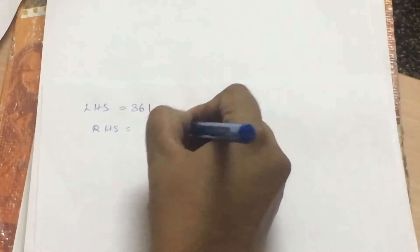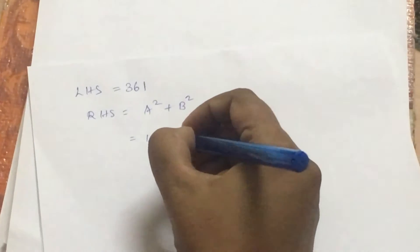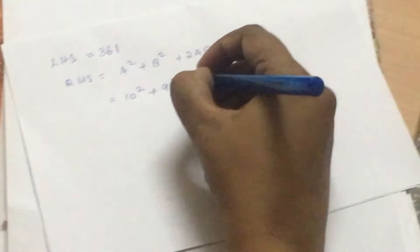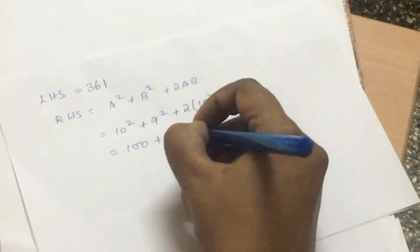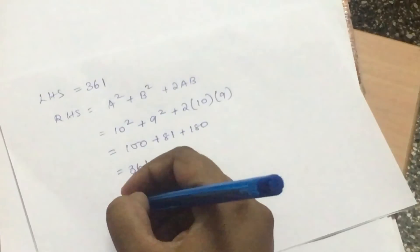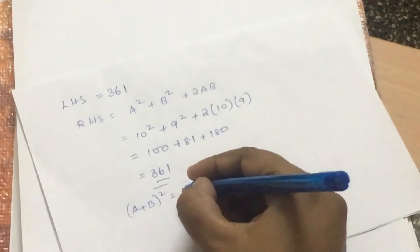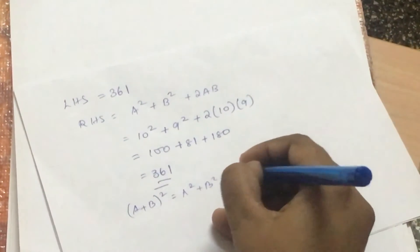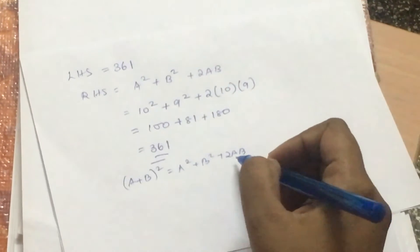Now, what about my RHS? My RHS goes as a² + b² + 2ab. Now, in place of a, I am going to substitute 10, so that makes it 10². In place of b, I am going to substitute 9, and that is 9² + 2×10×9. And that eventually ends up being equal to 361 again. There we have it. This is an identity where (a+b)² which is your LHS ends up being a² + b² + 2ab for any given value of a and b. It is true for all values of the variables a and b.